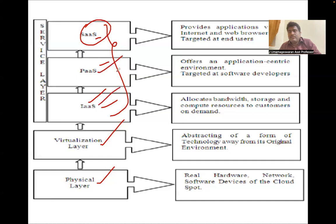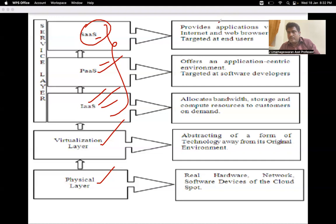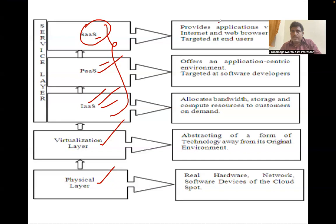The deployment model is different from the service model. The service model refers to software, platform, and infrastructure. The deployment model refers to where you are going to deploy your application — whether in a public cloud, a private cloud, or a hybrid mode. Public cloud, private cloud, and hybrid cloud make up the deployment model in cloud computing. In upcoming sessions we'll discuss more about the service model and deployment model in detail. Thank you.